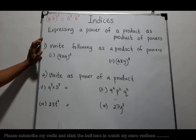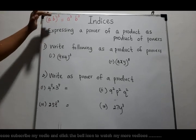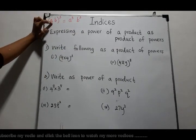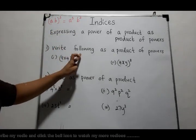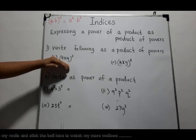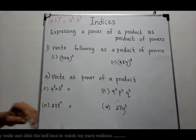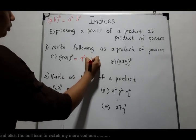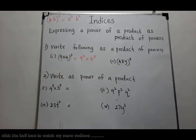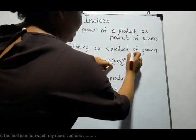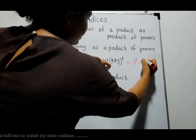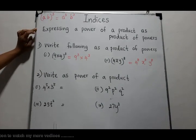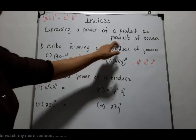Now let us do an example to polish our knowledge. The theorem we have learned is: (ab)³ = a³ · b³ — a power of a product equals a product of powers. You are asked to write given expressions as products of powers. For 9 into 4 to the power 3, it can be written as 9³ · 4³. For (4xy)⁸, we write 4⁸ · x⁸ · y⁸.